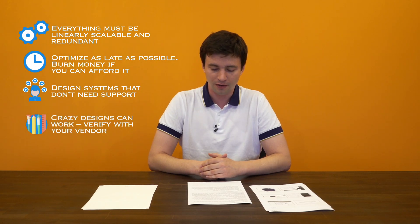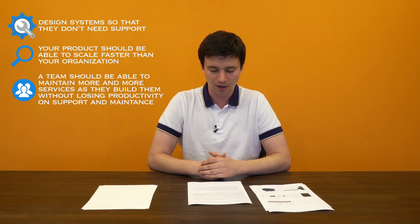To close this off, here are some lessons learned. Everything must be horizontally scalable and redundant. Optimize as late as possible — burn money if you can afford it. The later you start optimizing, the more impactful every optimization will be. We wasted time producing diffs in an attempt to optimize something we didn't really need to. Design systems so that they don't need support — your product should be able to scale faster than your organization. A team should be able to maintain more and more services without losing productivity on supporting previously built ones. And also: crazy designs like using S3 as a high-throughput database can actually work sometimes, and they might be your best option. So verify with your vendor. That's the end of our journey so far — I hope you enjoyed it, and see you next time.